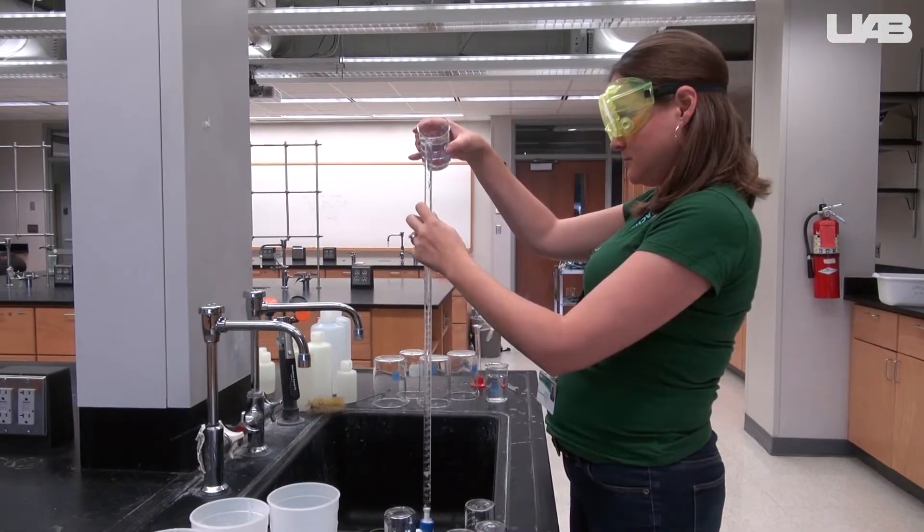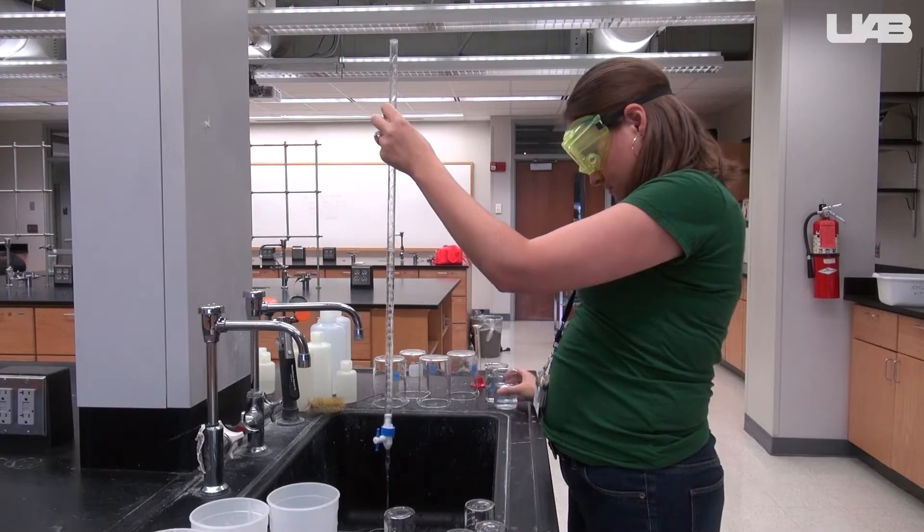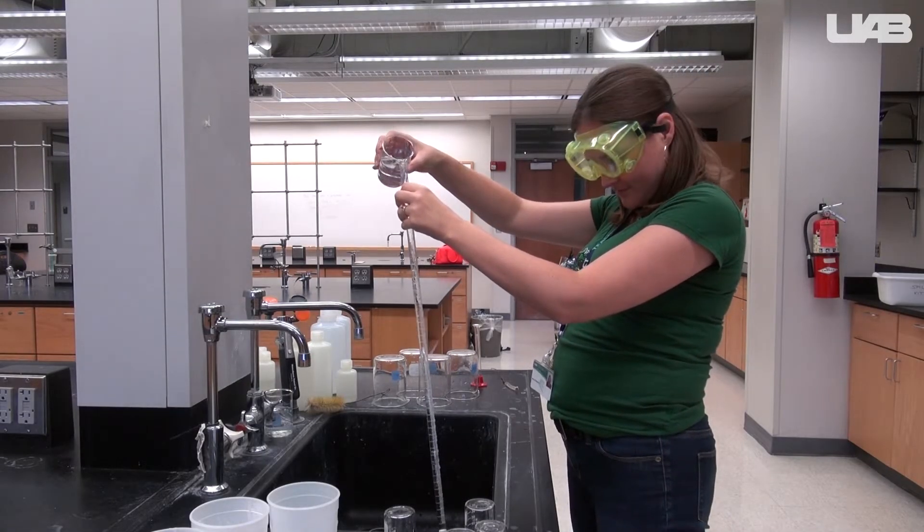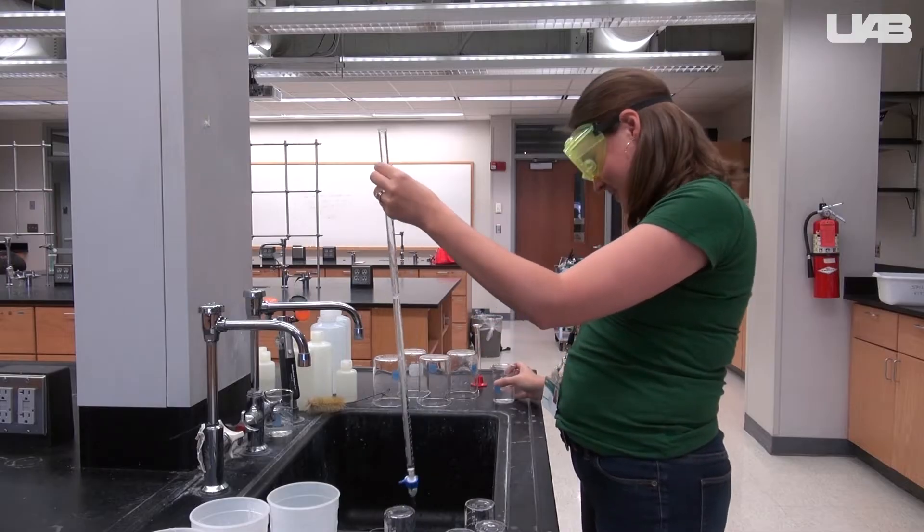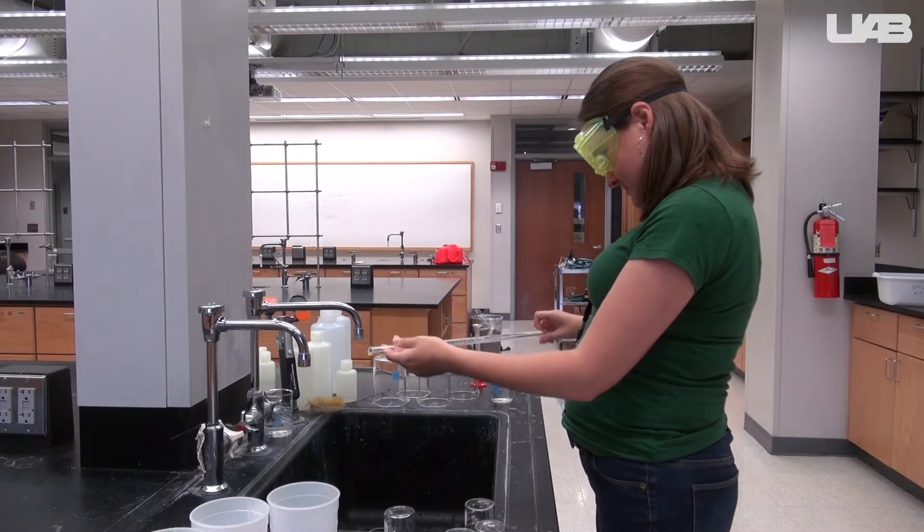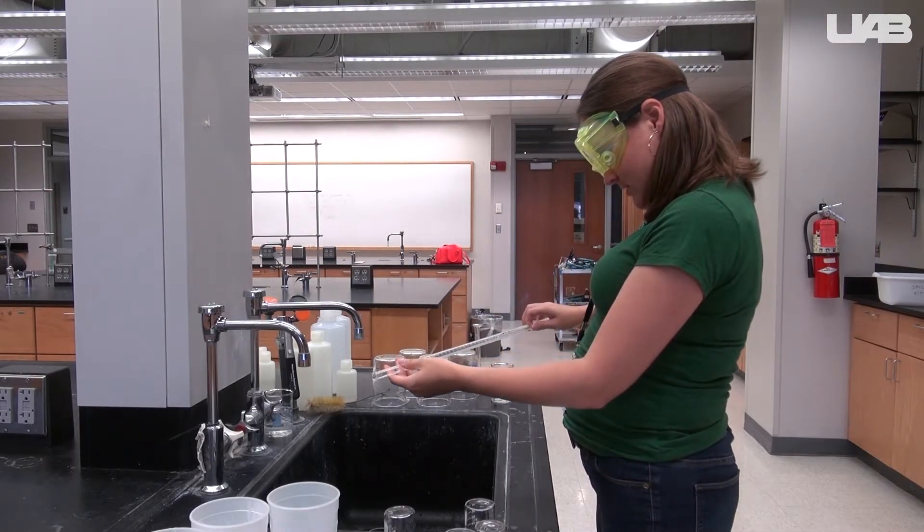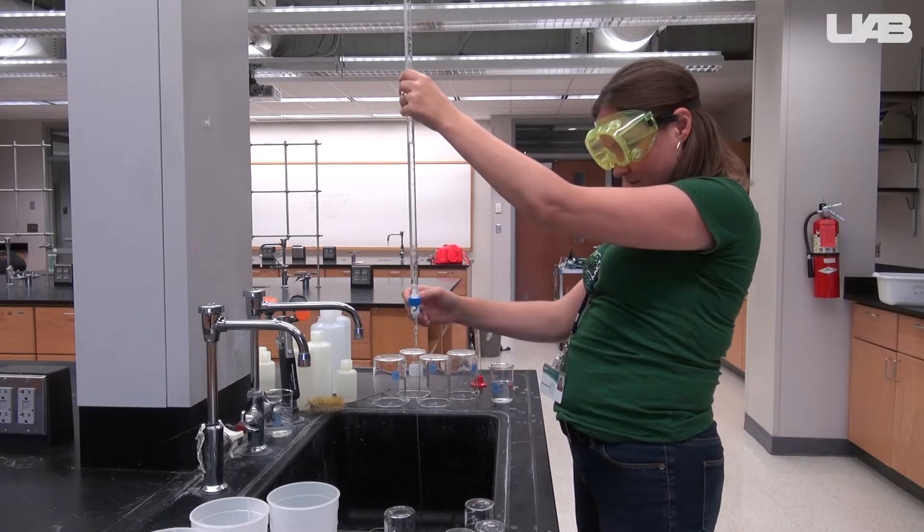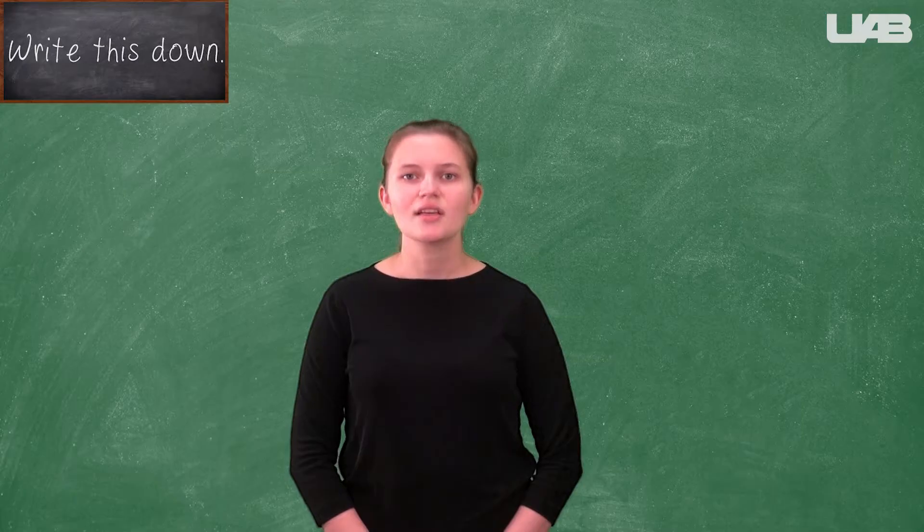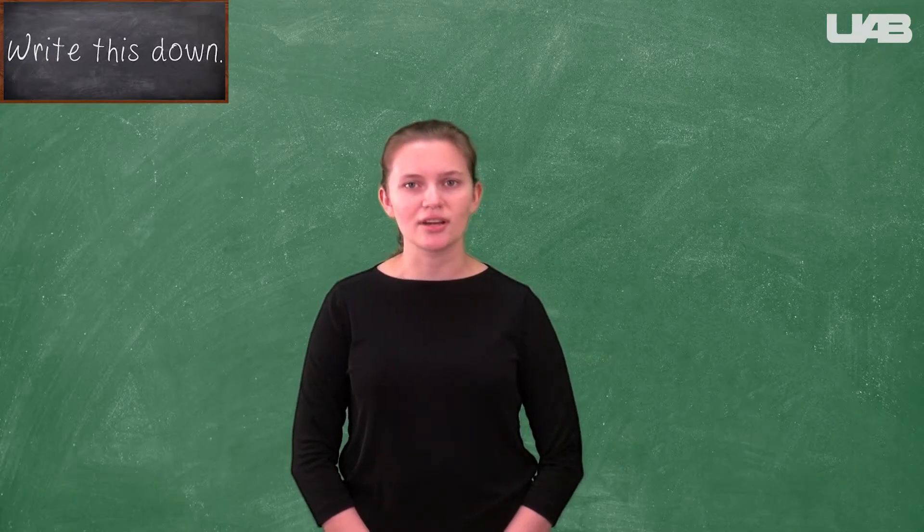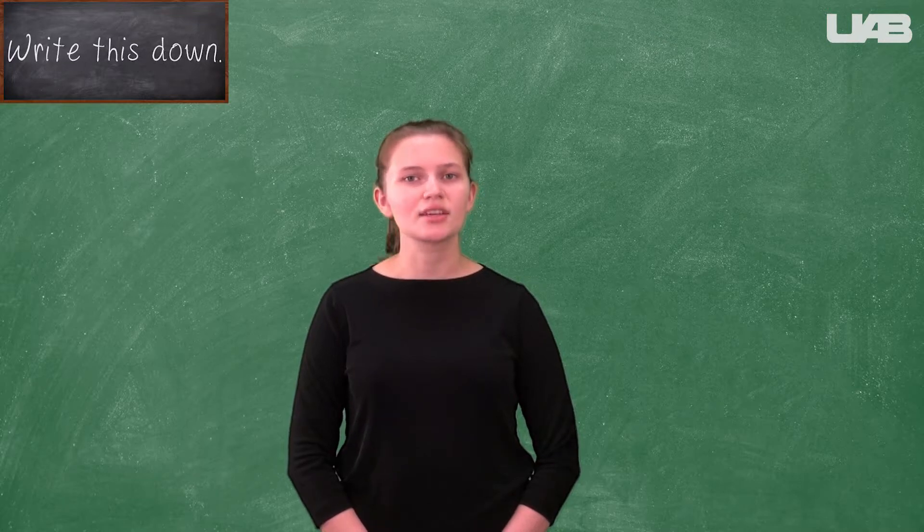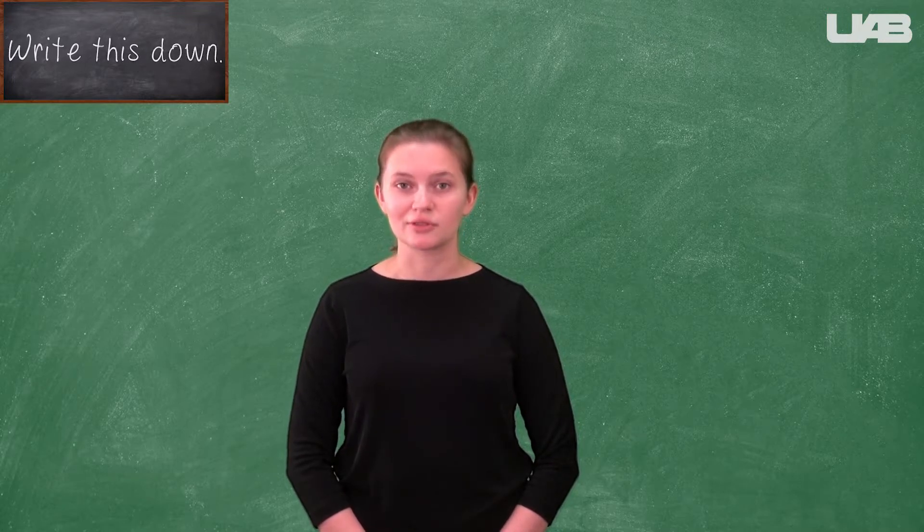To prime the burette, you must first rinse out the burette with water, then add a small amount of the sodium hydroxide to the burette. Coat the inside surface of the burette by rotating the burette with the sodium hydroxide. Drain this small amount of solution through the tip and repeat at least three times. This will ensure that the concentration of the sodium hydroxide solution is the same for each trial, since any water used to clean the burette will have been removed in the rinses.